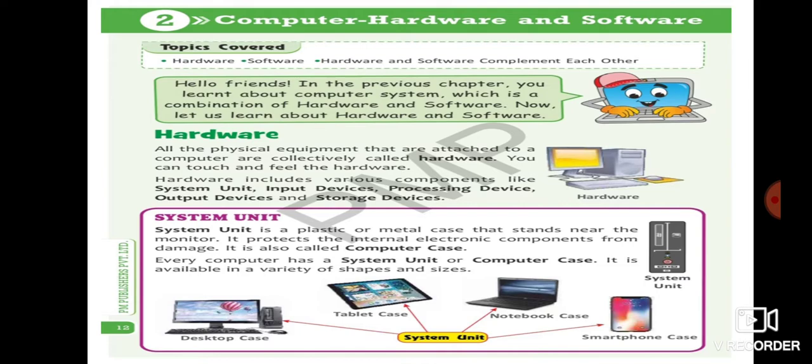So all the physical equipment that are attached to a computer are collectively called hardware. You can touch and feel the hardware. Hardware includes various components like system unit, input device, processing device, output devices and storage devices.